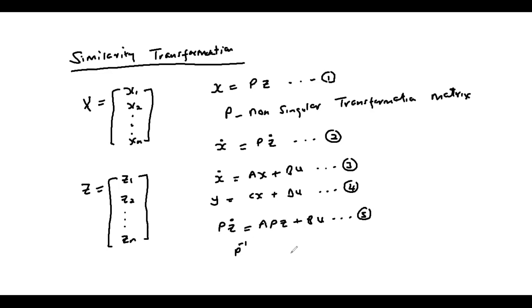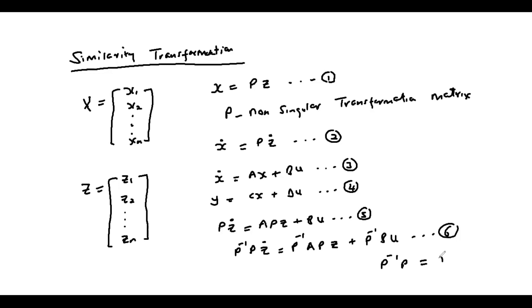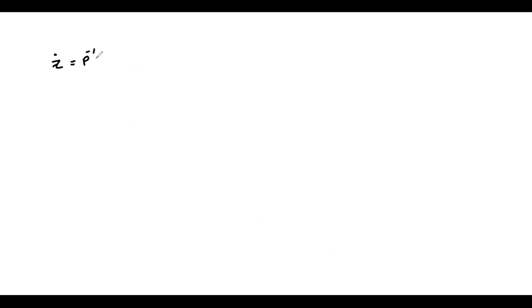If we pre-multiply both sides of equation five by P-inverse, we can write P-inverse P z-dot = P-inverse A P z + P-inverse B u, which we call equation six. Since P-inverse P equals I, the identity matrix, equation six simplifies to z-dot = P-inverse A P z + P-inverse B u, which we call equation eight.